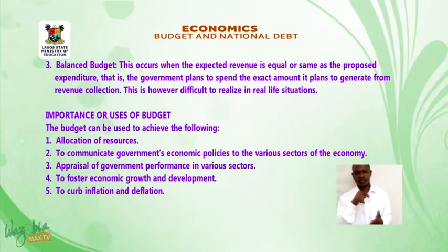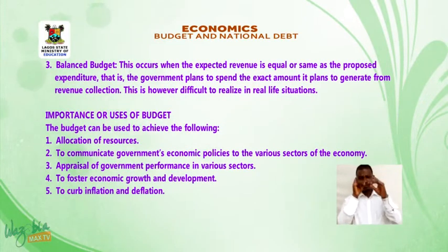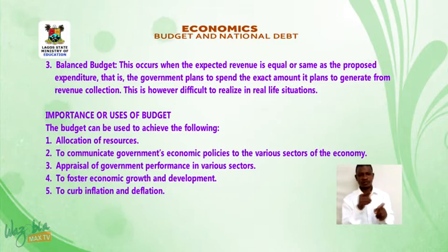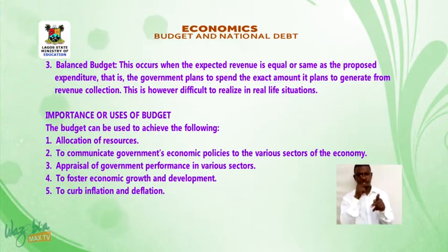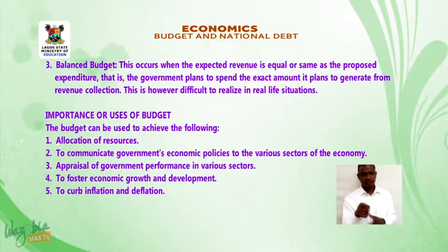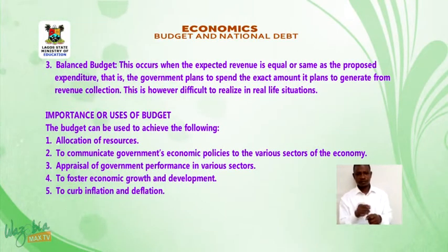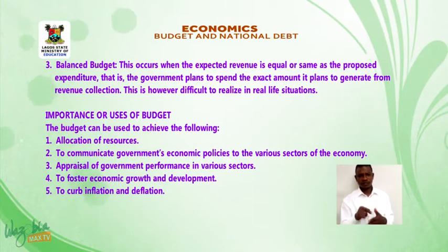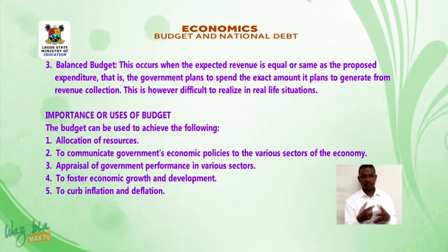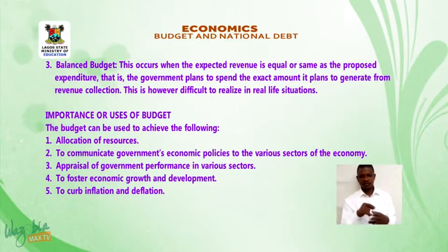Balanced budget: This occurs when the expected revenue is equal to the proposed expenditure — that is, government plans to spend the exact amount it plans to generate from revenue collection. This is however difficult to realize in real life situations.